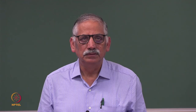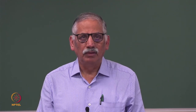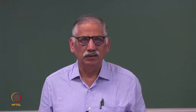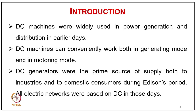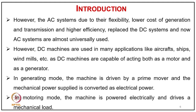DC machines were widely used in power generation and distribution in earlier days and can currently work in both generating and motoring mode. DC generators were the prime source of supply in both industry and domestic consumers during that period and all electrical networks were based on DC. However, the AC system, due to flexibility, lower cost of generation and transmission, and higher efficiency, replaced the DC system and is now almost universally used. DC machines are still used in many applications like aircraft, ships, and windmills, as they are capable of acting both as motor and generator.